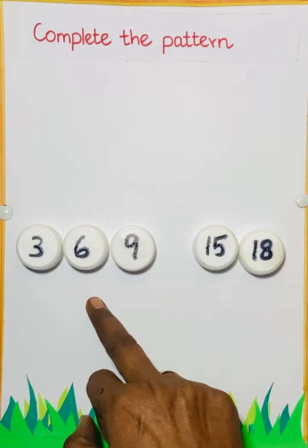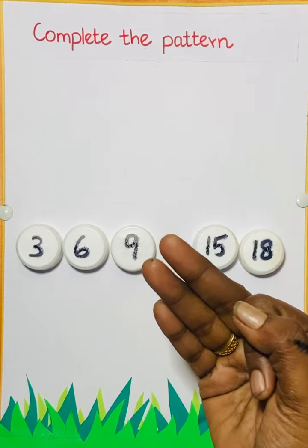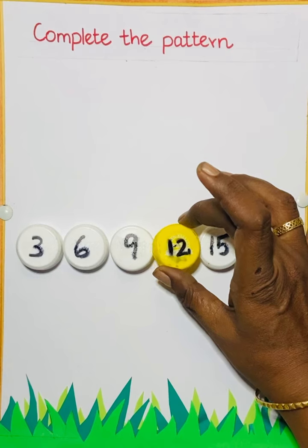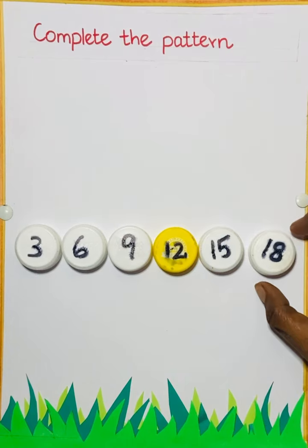So 3, 6, 9, 10, 11, 12. So what will be the next number? 12. So I am placing 12 here.